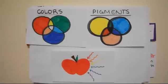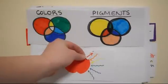So a red apple has magenta and yellow pigments in its skin, so the red wavelength of visible light reflects off of it while all the other colors are absorbed.